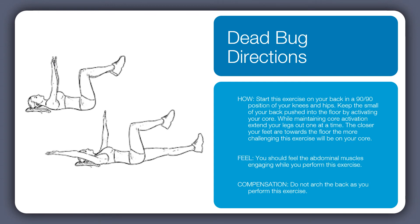For the dead bug, lie on your back and place the hands above the chest, the knees above the hips, with the feet in line with the knees. I generally recommend just maintaining this position. There is a more challenging variation where you extend the opposite arm and leg, but at first it's best to stay in the more gentle position during phase one.